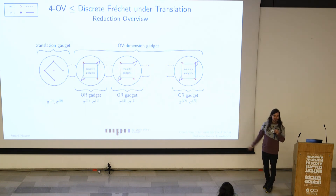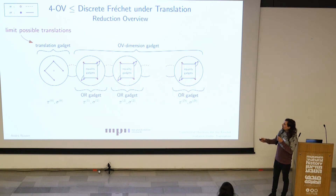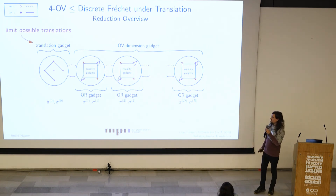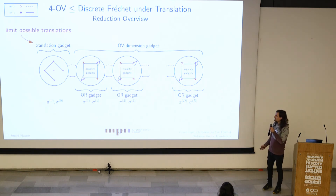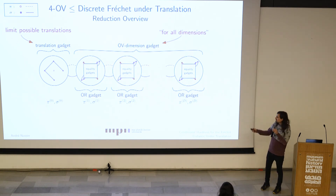This is how the whole reduction looks. There are actually just four gadgets we need. First, a translational gadget that limits the possible translations — it says we cannot translate the blue curve too much up, down, left, or right. Then we have an OV dimension gadget, where we check if there's a zero in the first dimension of the four vectors, a zero in the second dimension, and so on until the last dimension.